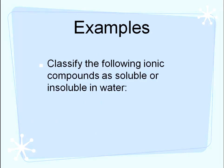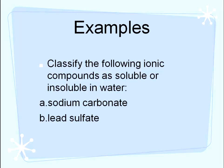Let's do some examples. Classify each of the following as either soluble or insoluble in water: sodium carbonate and lead 2 sulfate. For sodium carbonate, look on the chart for the carbonate ion — it's on the bottom half of the table and is generally insoluble, except if bonded to alkali metals. Sodium is an alkali metal, so sodium carbonate is soluble. For lead 2 sulfate, the sulfate ion in the top half is generally soluble, except if bonded to lead 2 — so lead 2 sulfate is insoluble in water.